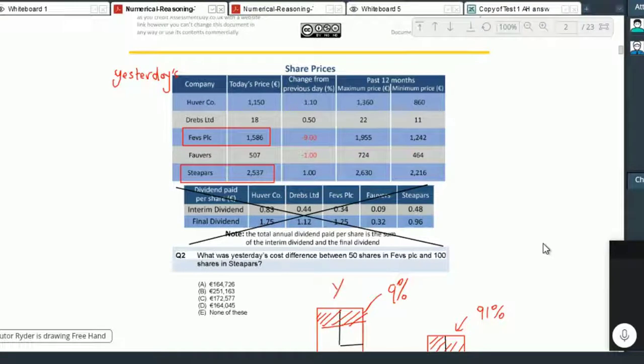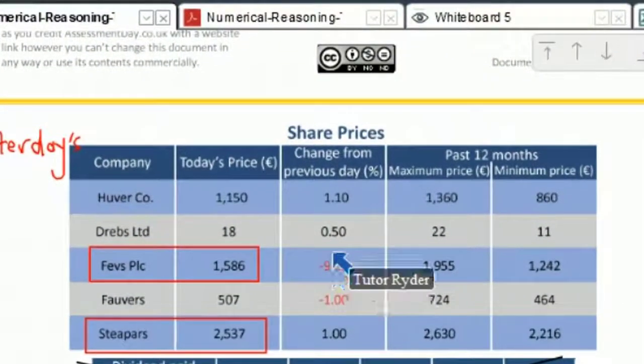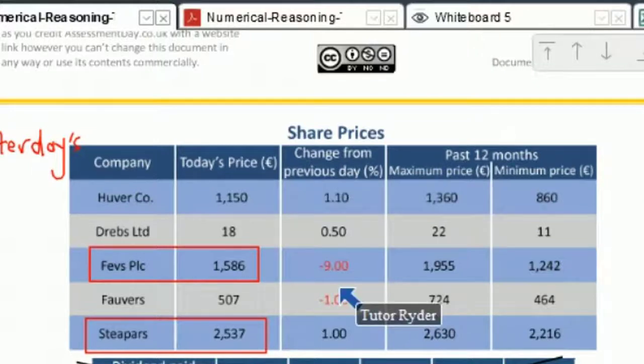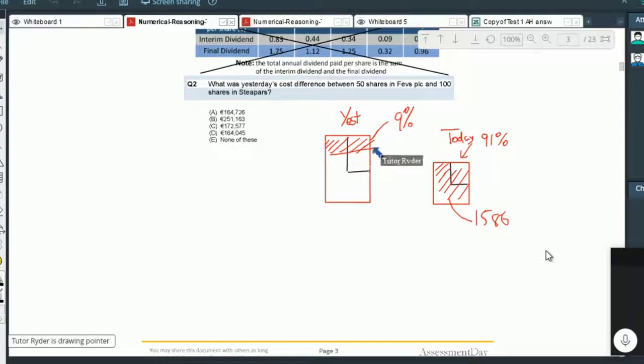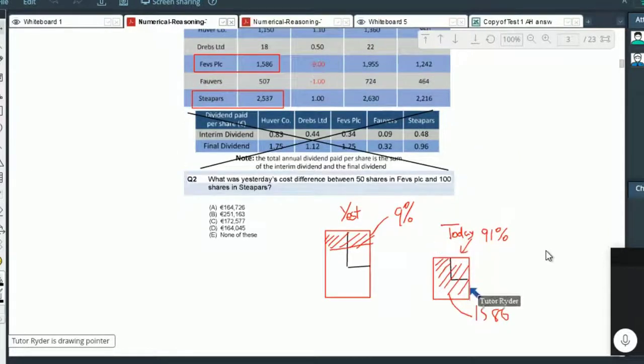So this is Feb's yesterday and this is Feb's today. How do you know it's 91 today? There, because we took off 9%, the change from previous day's percentage. Minus 9. If you minus 9 from 100%, assuming that yesterday was everything, we take off 9%, we're down to a smaller amount today, right? I get it.